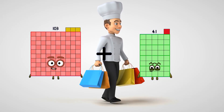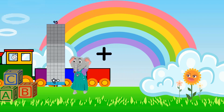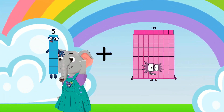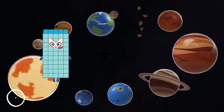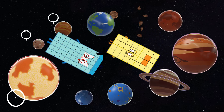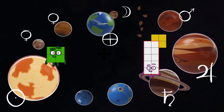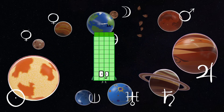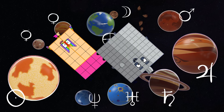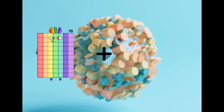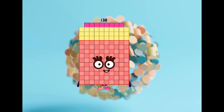103 plus 63 equals 166. 5 plus 59 equals 64. 55 plus 32 equals 87. 4 plus 40 equals 44. 28 plus 90 equals 118. 54 plus 84 equals 138.